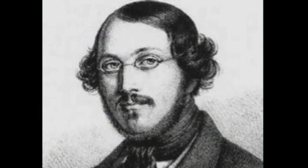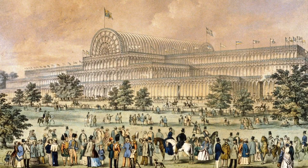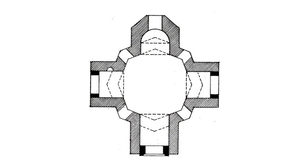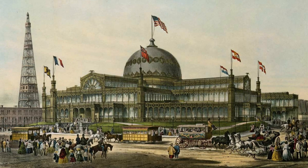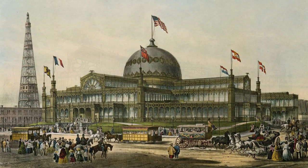The New York Crystal Palace was designed by George Carstensen and German architect Charles Gildemeister, and was directly inspired by the Crystal Palace built in London's Hyde Park to house the Great Exhibition of 1851. The New York Crystal Palace had the shape of a Greek cross and was crowned by a dome 100 feet in diameter. Like the Crystal Palace of London, it was constructed from iron and glass.